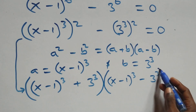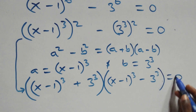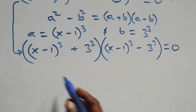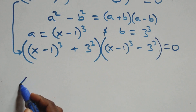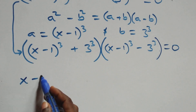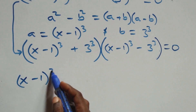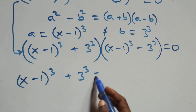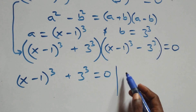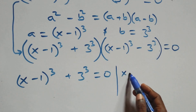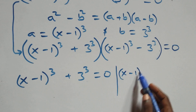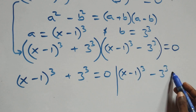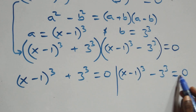This gives us two possible cases. The first case: (x minus 1)^3 plus 3^3 equals 0. The second case: (x minus 1)^3 minus 3^3 equals 0.